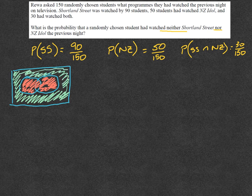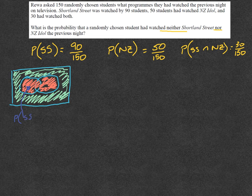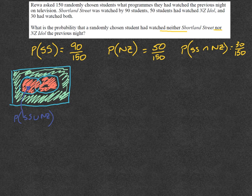And so what we've got is that this bit in the middle here is the probability of Shortland Street or, should I say, the Union of New Zealand Idol. That's what those two circles are actually telling you is that you're looking for the Union. But you're not wanting those two, you're wanting the outside.